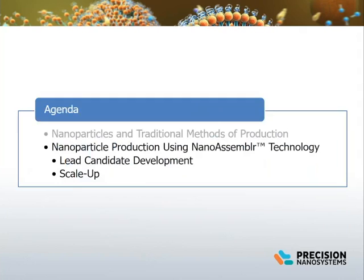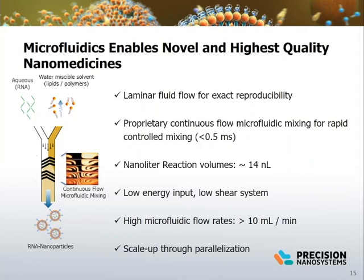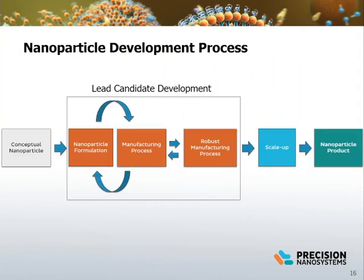Next, we will discuss nanoparticle production using the NanoAssembler technology. The NanoAssembler microfluidic technology takes advantage of laminar flow for reproducible mixing conditions. The rapid mixing speed and low reaction volumes result in uniform particle formation. Low energy input and low shear mixing minimizes the forces and impact on sensitive materials and drug payloads, and scale is achieved through operating mixers in parallel. The nanoparticle development process can be a complex and iterative process. It starts with the conceptual nanoparticle concerning the drug payload and polymer or lipid delivery system. Formulation and manufacturing process development is done empirically where nanoparticle composition and process parameters are varied — therefore, the throughput of the manufacturing equipment limits the speed of nanoparticle development.